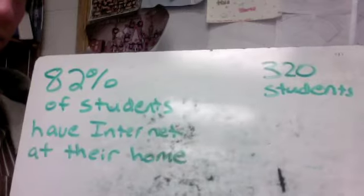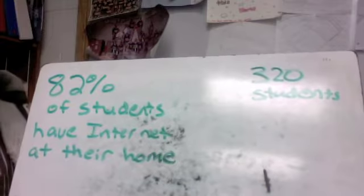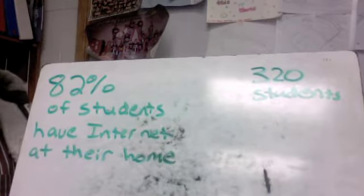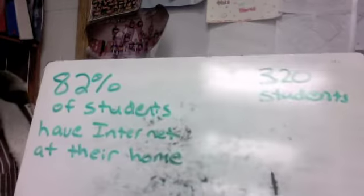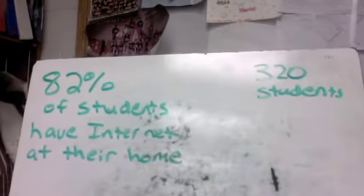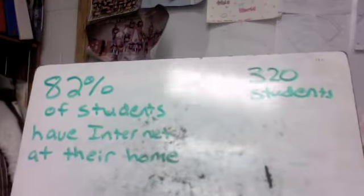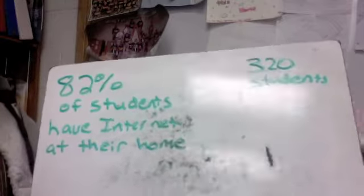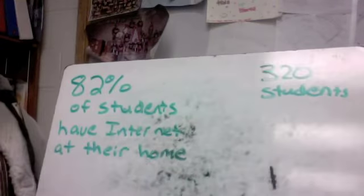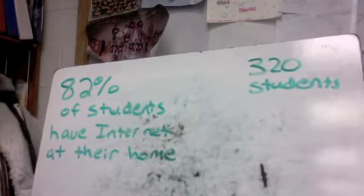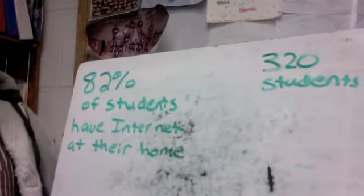All right. Next example I've got here is with the 1:1 computers, and you guys will get these next year. 82% of students at Grundy Center have internet at their house. And 100% can get it whenever they want because you can come by the school, go to the library, you can get internet. But as far as in their homes, 82%. So how many kids is that?